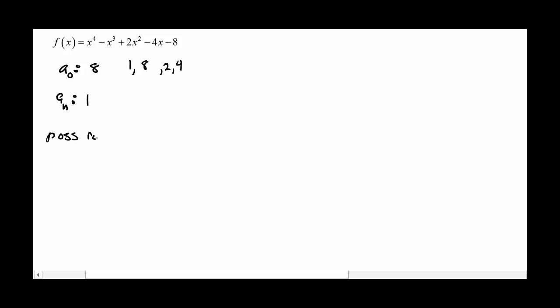So our possible roots would be plus or minus 1 over 1, 8 over 1, 2 over 1, and 4 over 1. Okay. So we've got 8 possibilities.